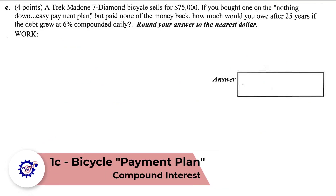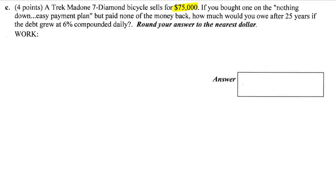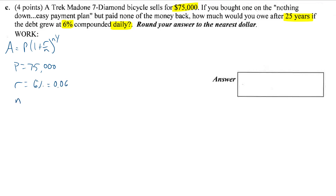We've got a bicycle that sells for $75,000. If you buy with nothing down and no payments, how much do you owe after 25 years at 6% compounded daily? This is compound interest, so I'm going to use A = P(1 + R/N)^(N×Y). Listing the facts: P = 75,000, R = 0.06, N = 365 (daily), and Y = 25.